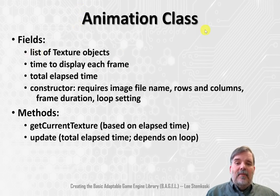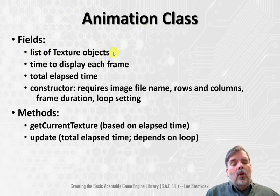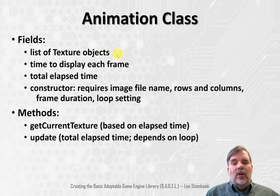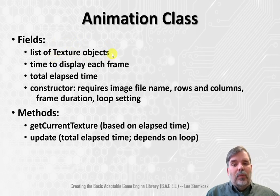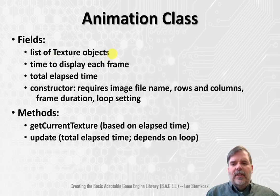So when we set up an animation in the constructor, one of the first things we'll do is create a list of texture objects. We'll do that by loading a single image — we won't load the image anew every time we want to create a new texture. All these texture objects will share the same image reference, and each one will have a different rectangle specifying the region of the image we'd like to draw.